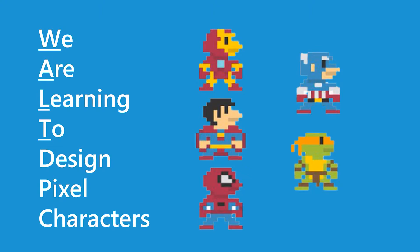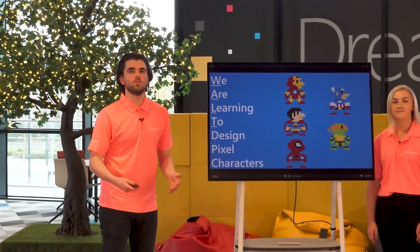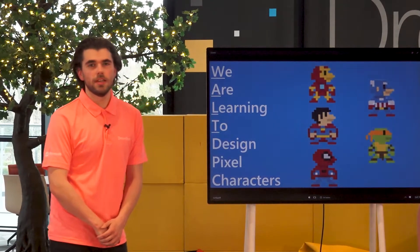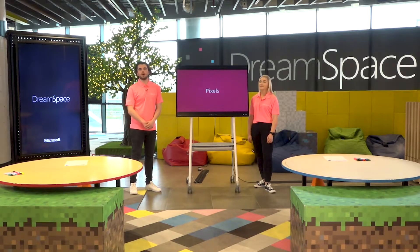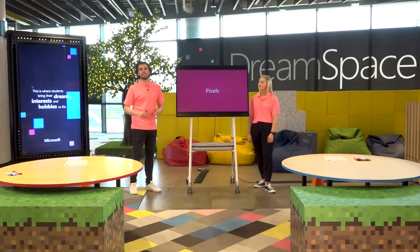You can see some examples of pixel characters on the screen right now. Pixel characters were also used in old retro video games like Super Mario Bros., Sonic, and Pac-Man. But what exactly is a pixel? Well, every screen that we look at is made up of lots and lots of tiny little squares. These are called picture elements, or pixels for short. Each one of these pixels can only contain one color at a time, so it takes lots of them to make up the screens that we look at.